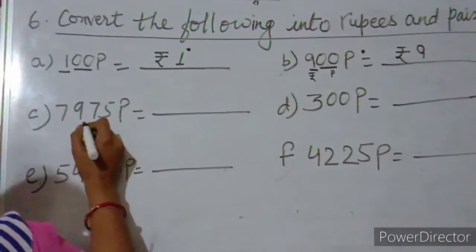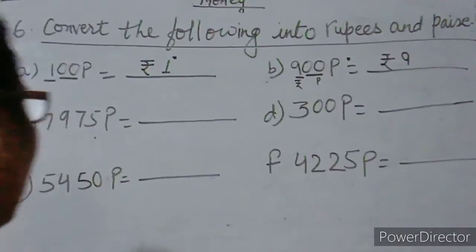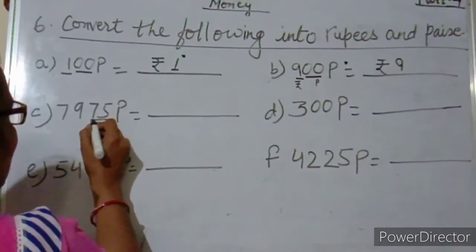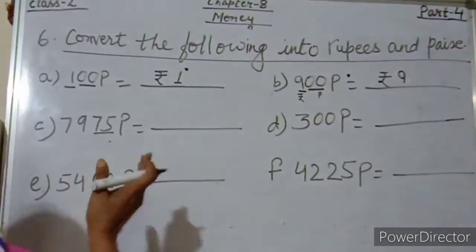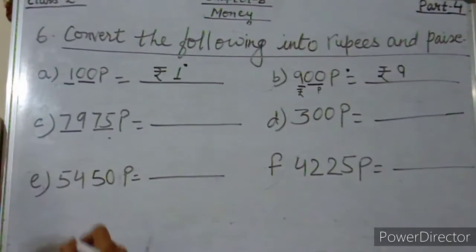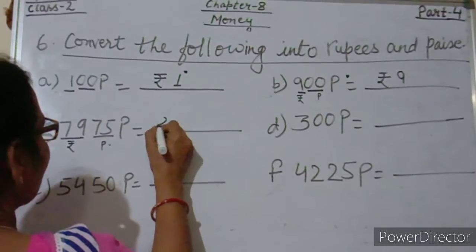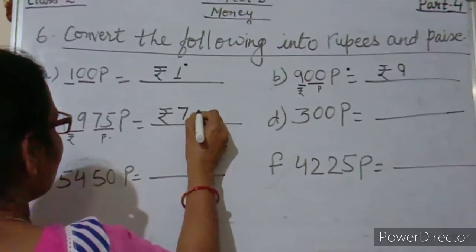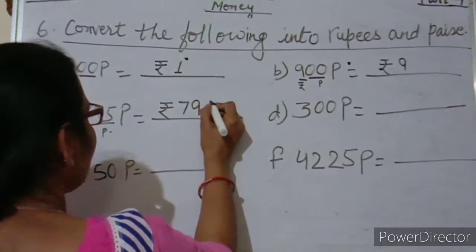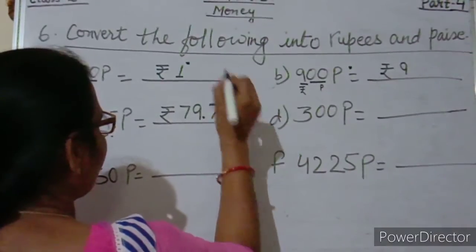Now 7,975 paise. We will separate the two digits from the right as paise, and the rest of the digits as rupees. So 75 is the paise, and 79 is the rupees. We write 79 rupees, put a dot, and then 75 paise. So 7,975 paise is equal to 79 rupees and 75 paise.